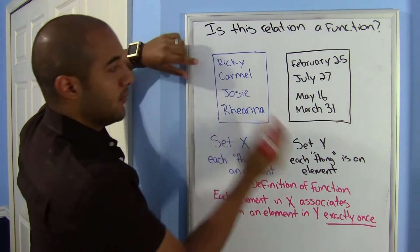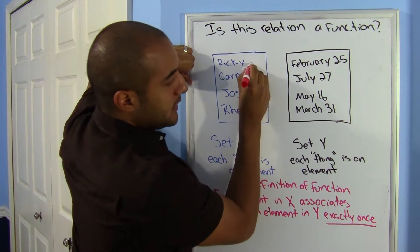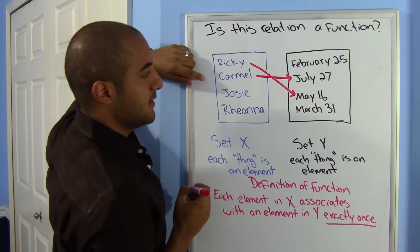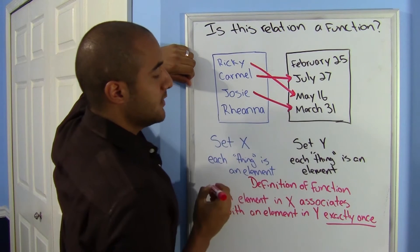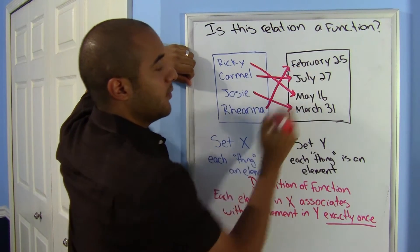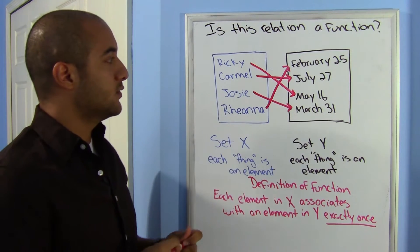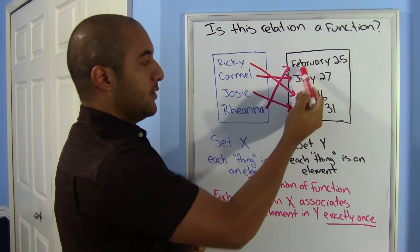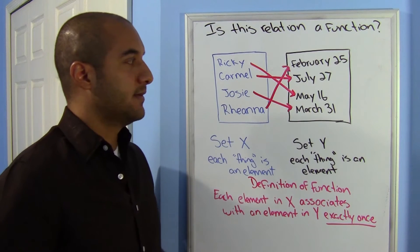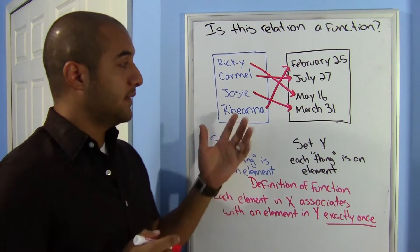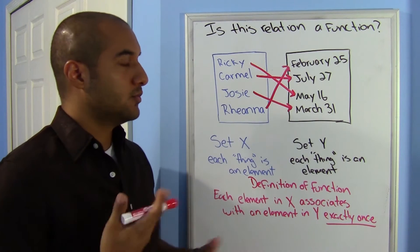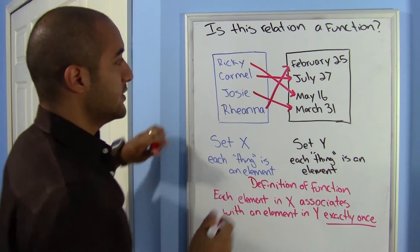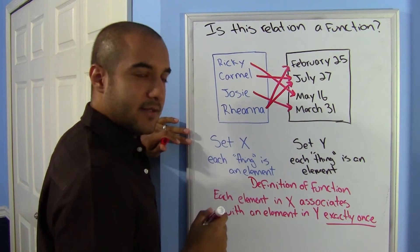If I wanted to match up the people with their birthdays, Ricky is May 16th, Carmel is July 27th, Josie is March 31st, and Rihanna is February 25th. Notice that each person only goes to one birthday, and that makes sense. If Rihanna went to both February 25th and July 27th, that wouldn't make sense. This shows you why this is a relation.